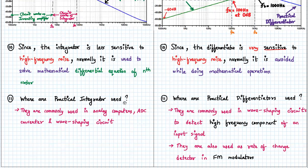Practical integrators are commonly used in analog computers, ADCs (analog to digital converters), and wave-shaping circuits. Practical differentiators are commonly used in wave-shaping circuits to detect the high frequency component of an input signal, and also as rate-of-change detectors in FM modulators.